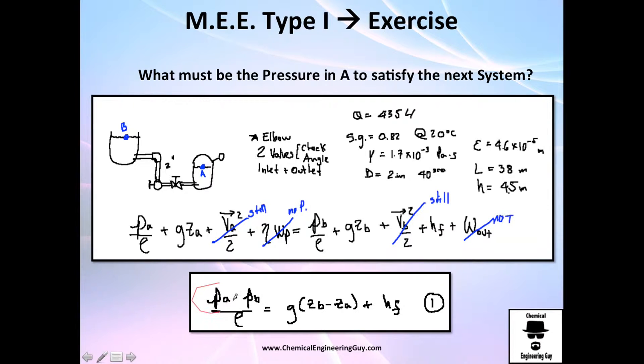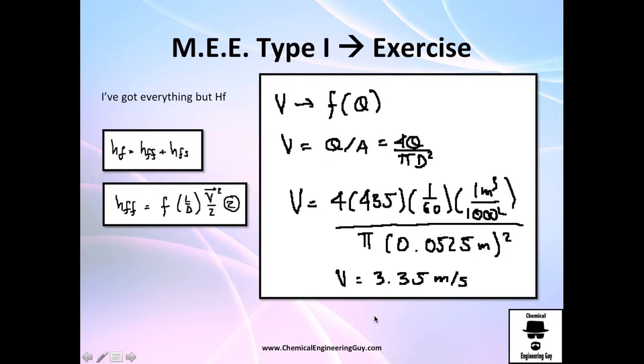So we need to find this. We in theory have everything else. We have the height, we can calculate the velocity, and with the velocity we can calculate the friction loss.